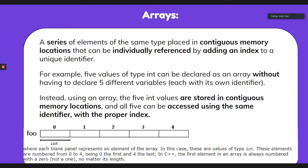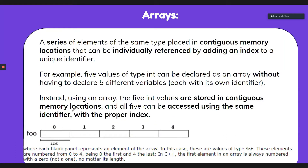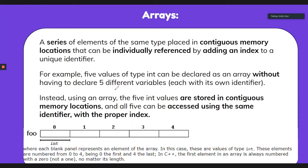Using an array, the five int values are stored in contiguous memory locations — one, two, three, four, five. All five can be accessed with the same identifier, in this case foo. That's our variable name — you can name it whatever you want — and you can point to each part of the array, either index zero, one, two, or whatever, without having to create separate variables for each space.